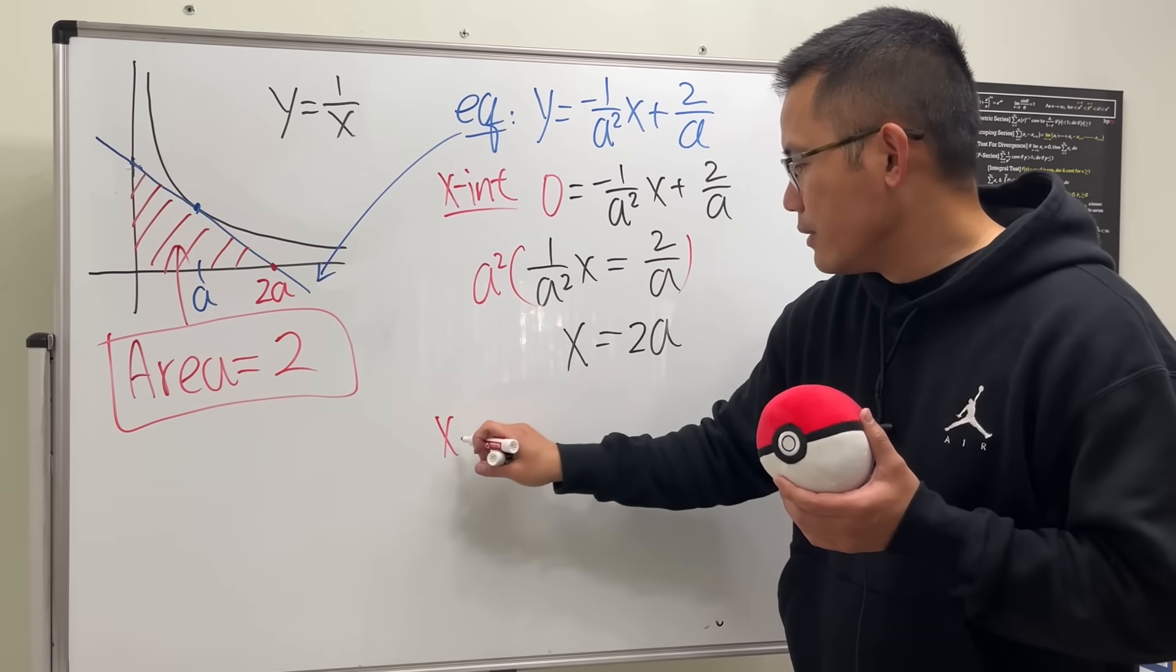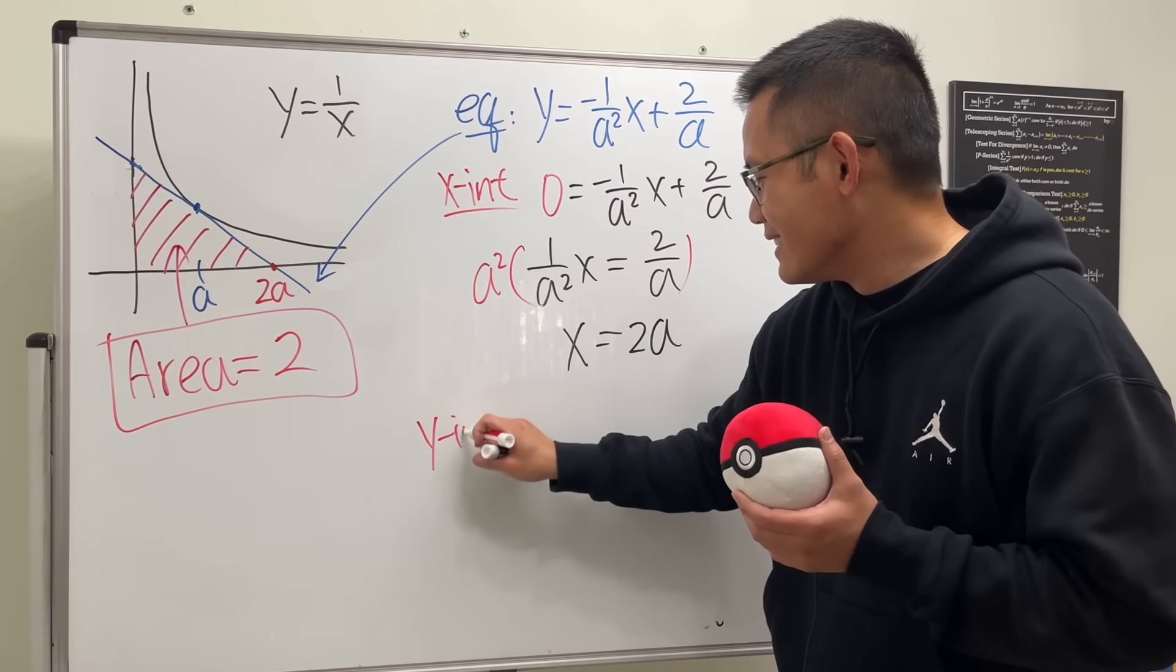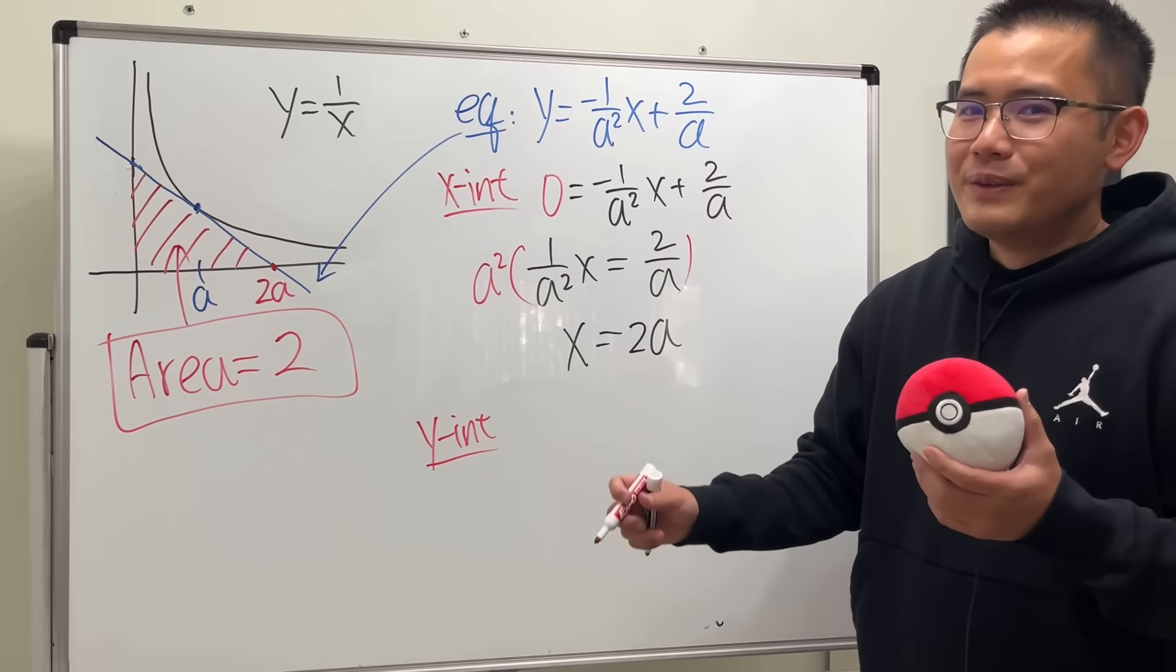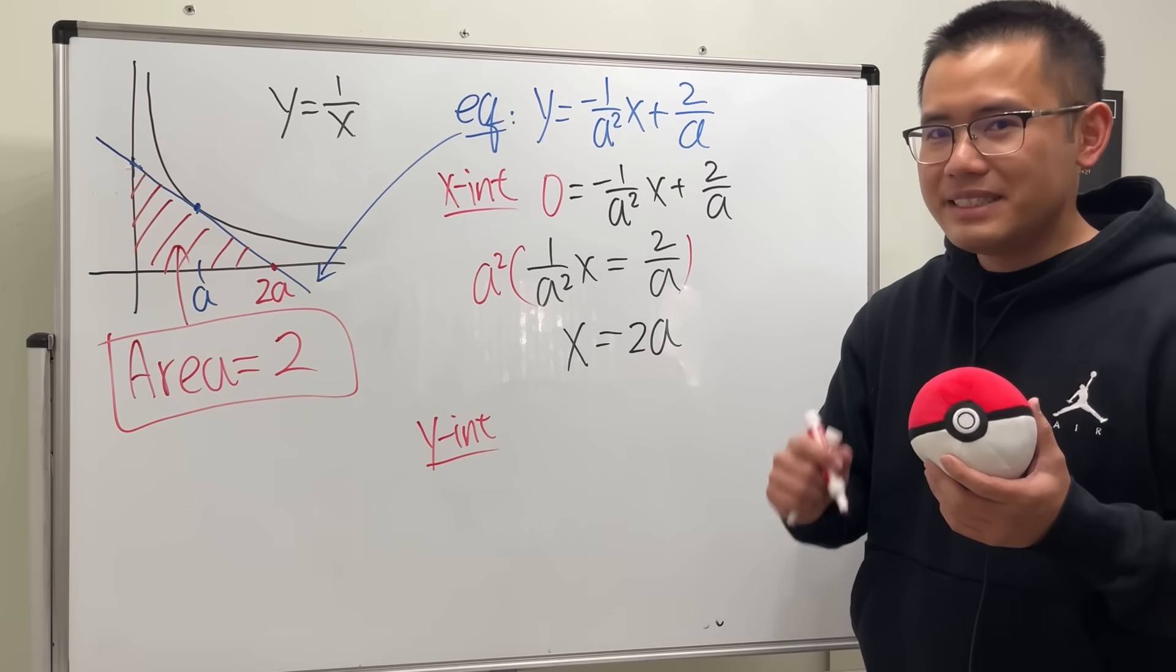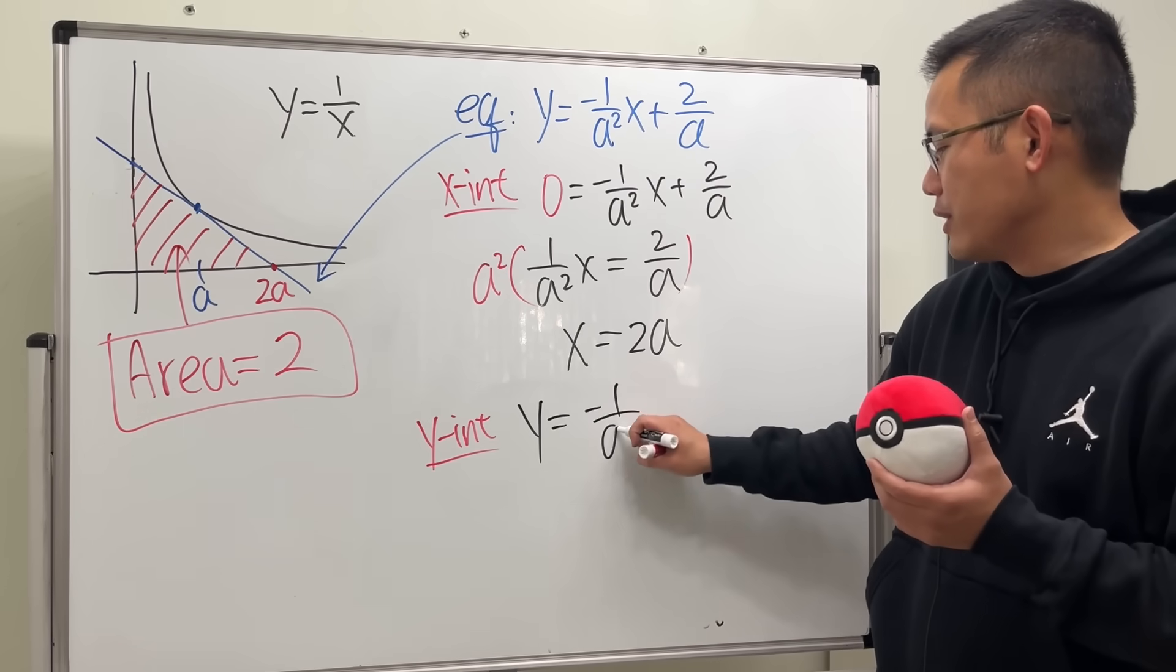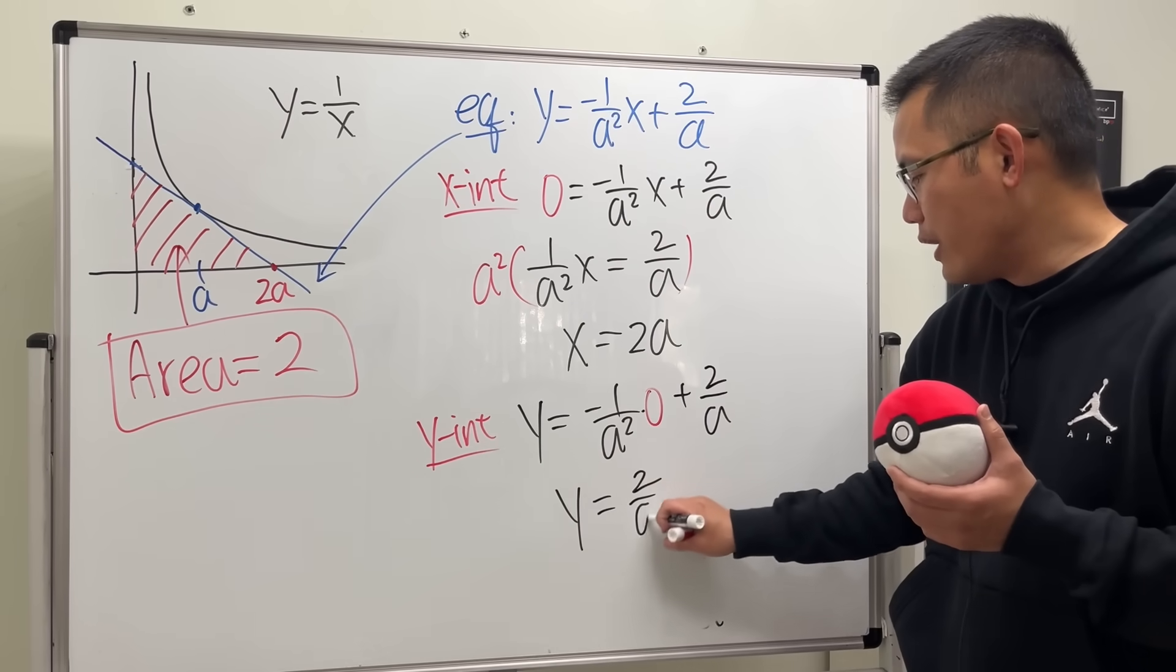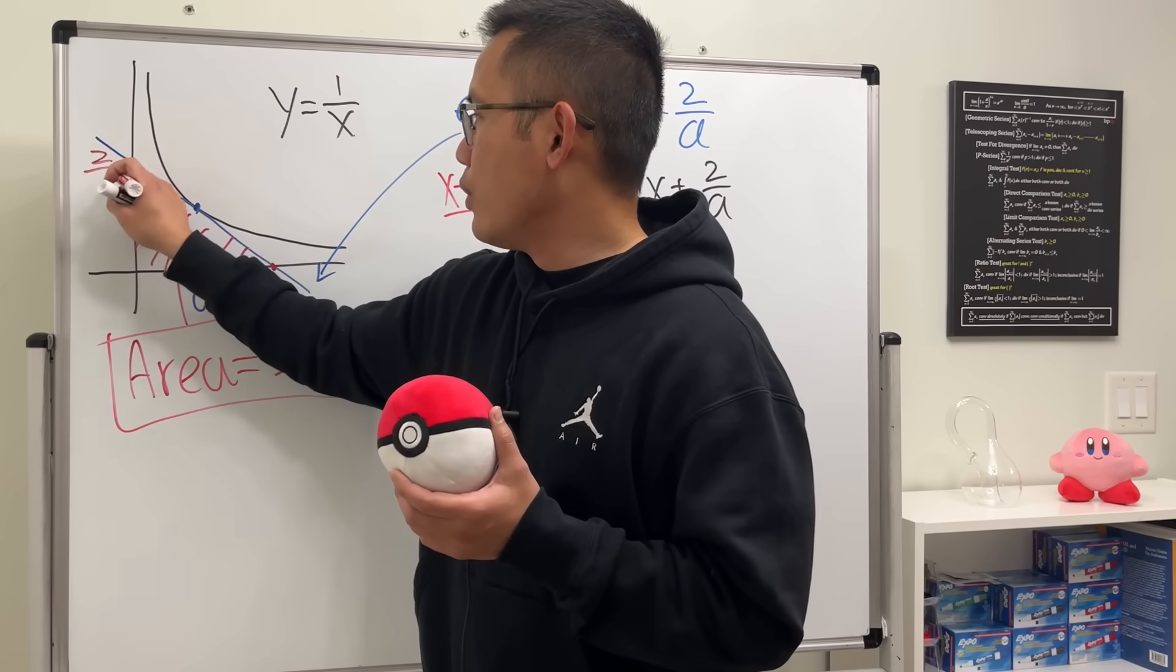And then for the y-intercept, for this one, we just have to make x equal to 0. So we get y is equal to, well, you know the answer is down already, but I just want to show you guys all the work. So multiply by 0 and then plus 2 over A, and that gives y equals 2 over A. So that means this right here is 2 over A.